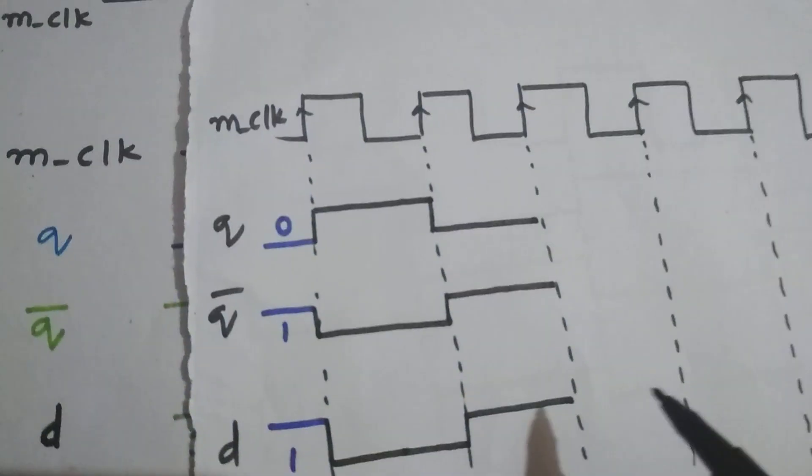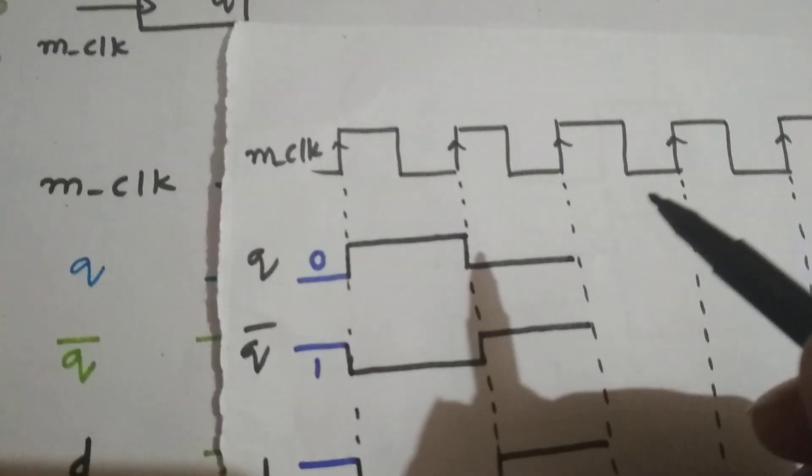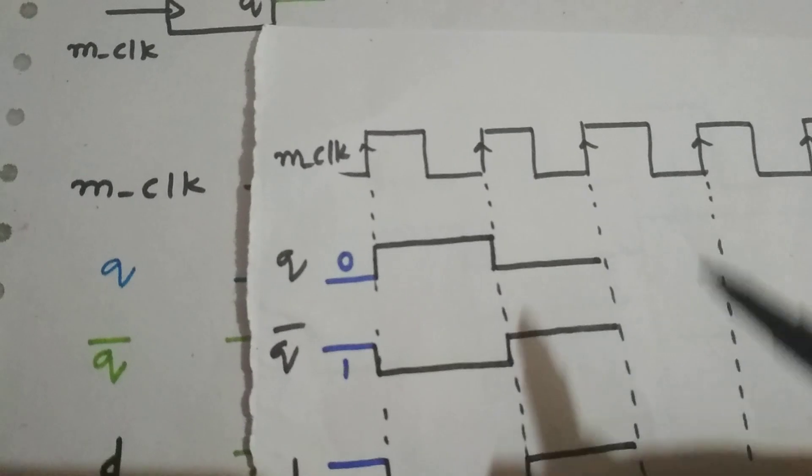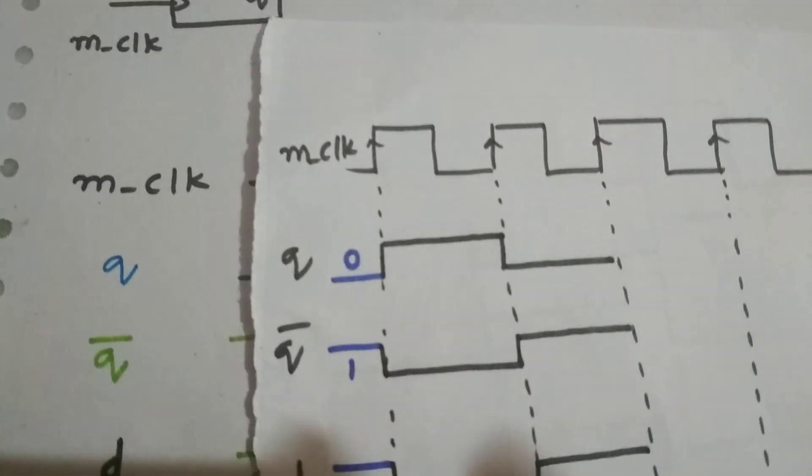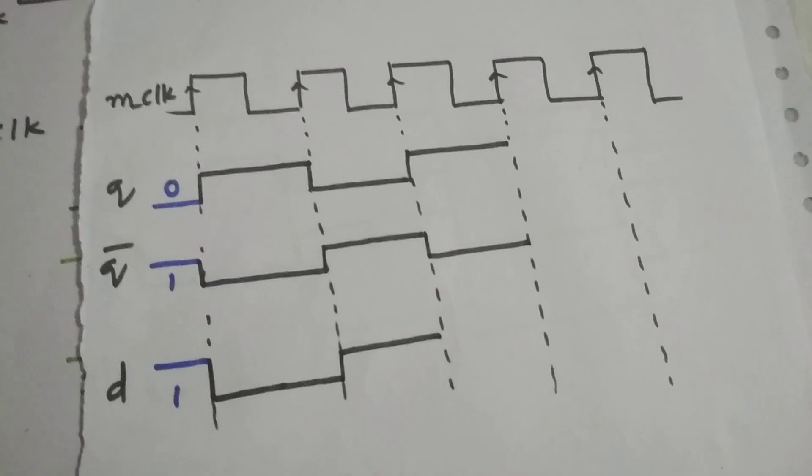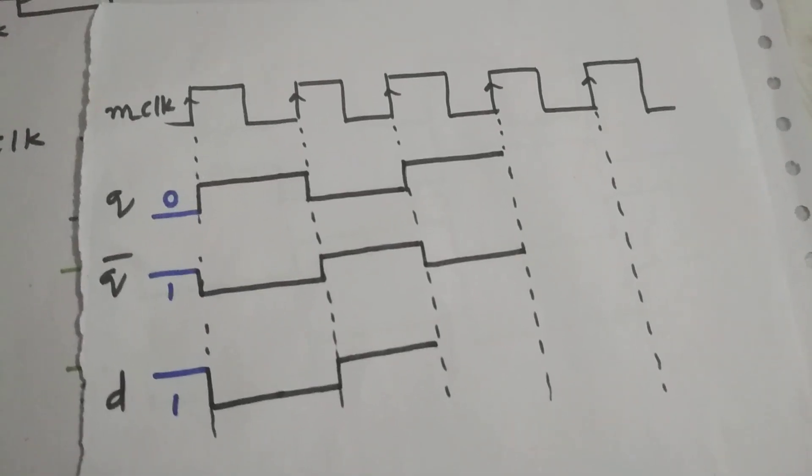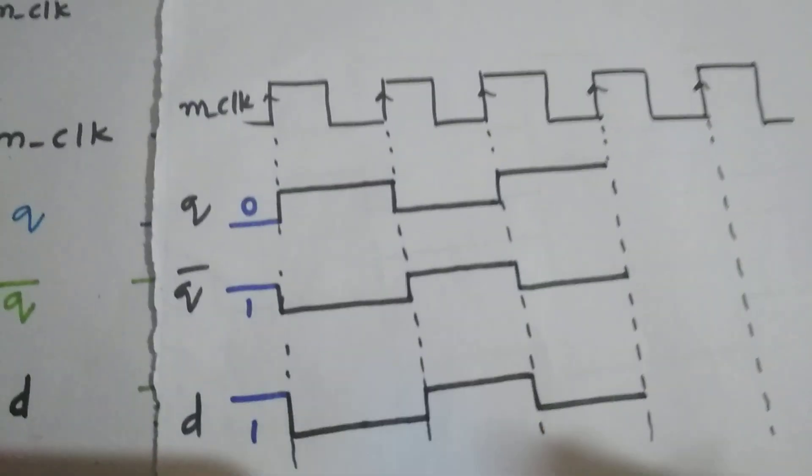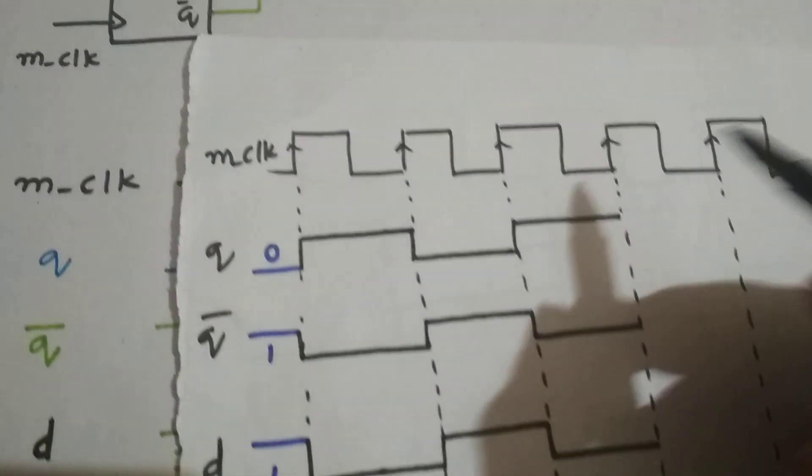Now again the D is fed back to Q. Since D is 1, Q will also become 1. So again Q is 1, so Q bar will be 0.